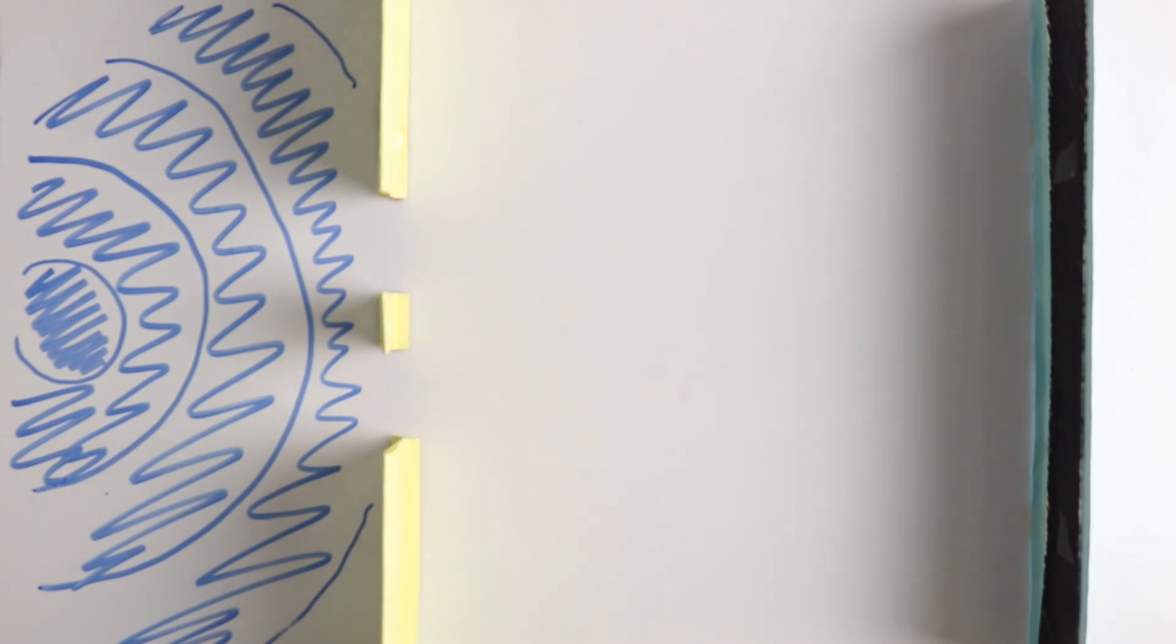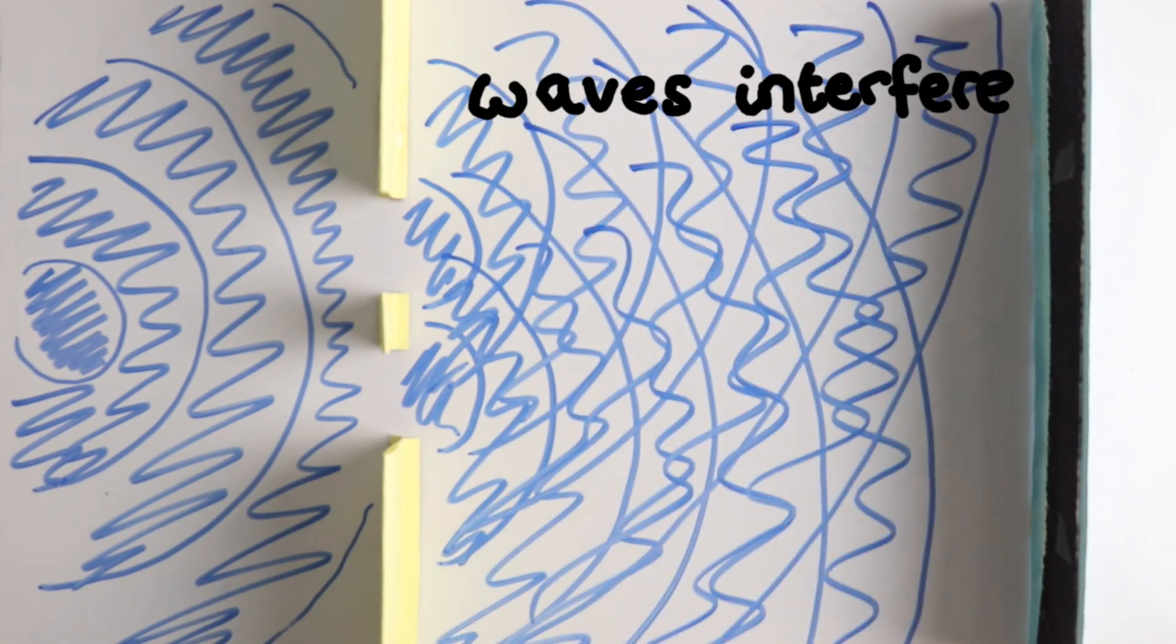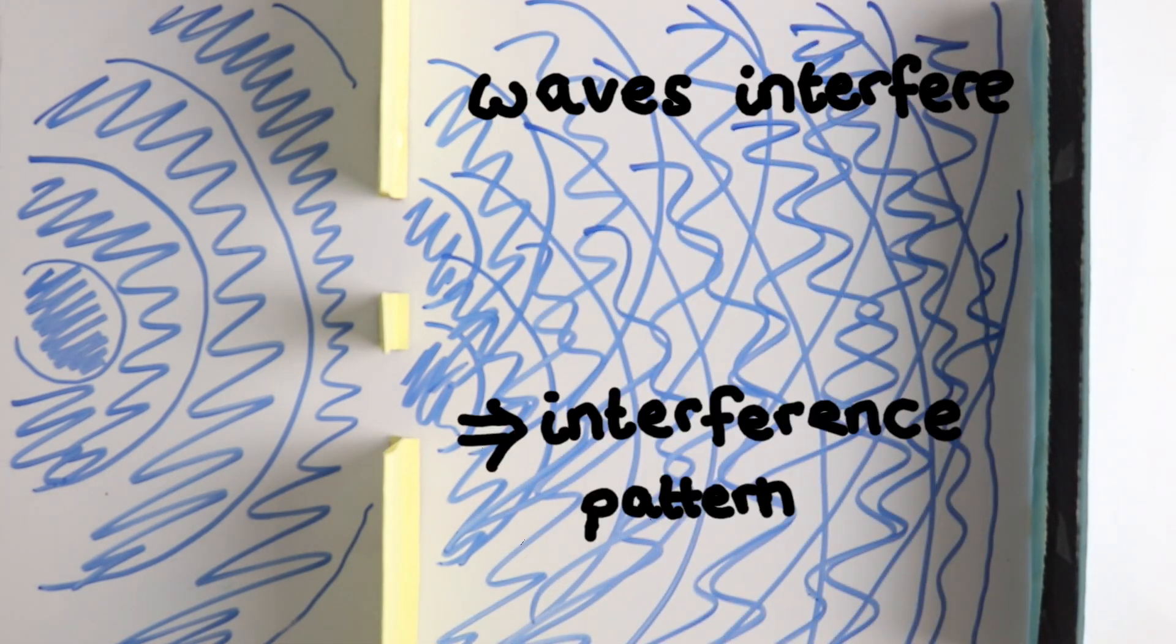As in, half the actual mass of the electron goes through this side, and half through the other. Then these two waves can interfere with each other, and this interaction causes the interference pattern.